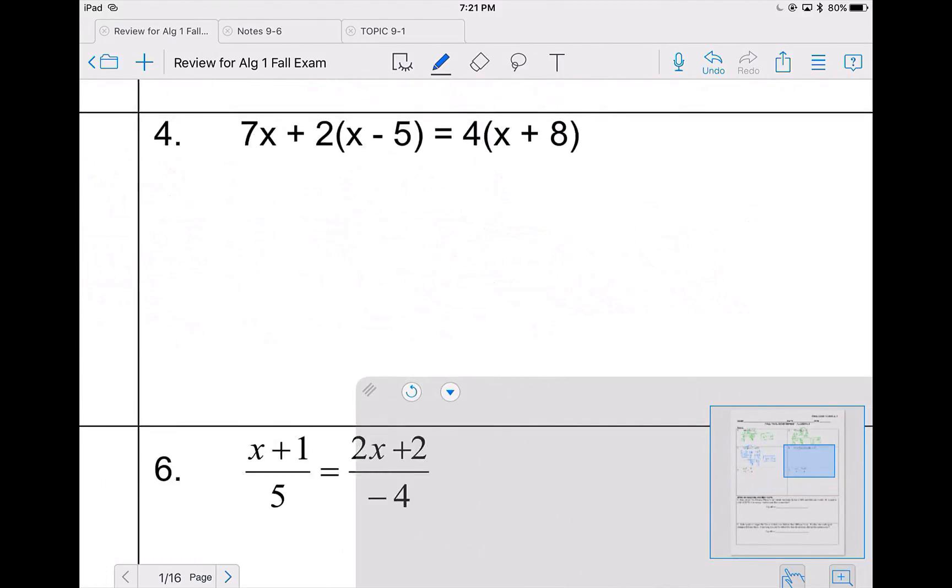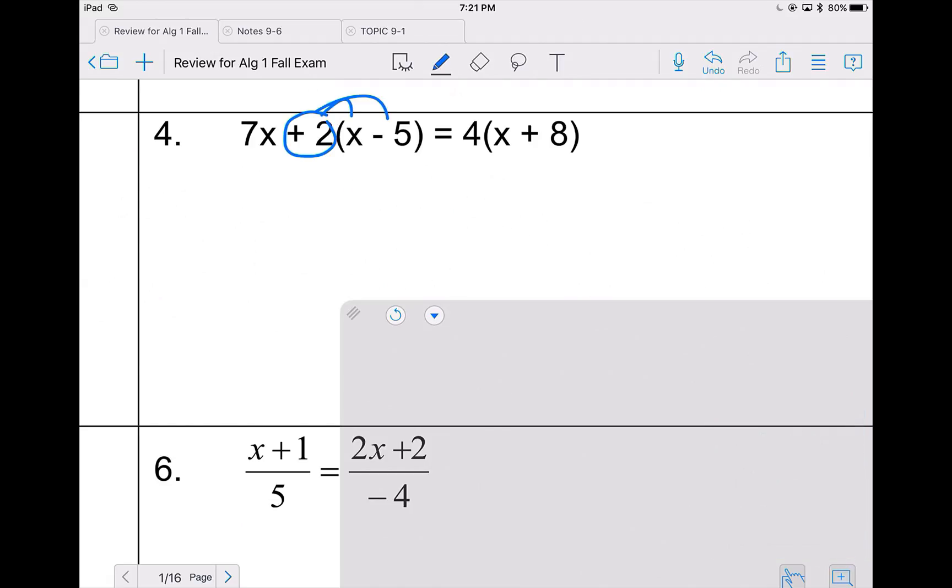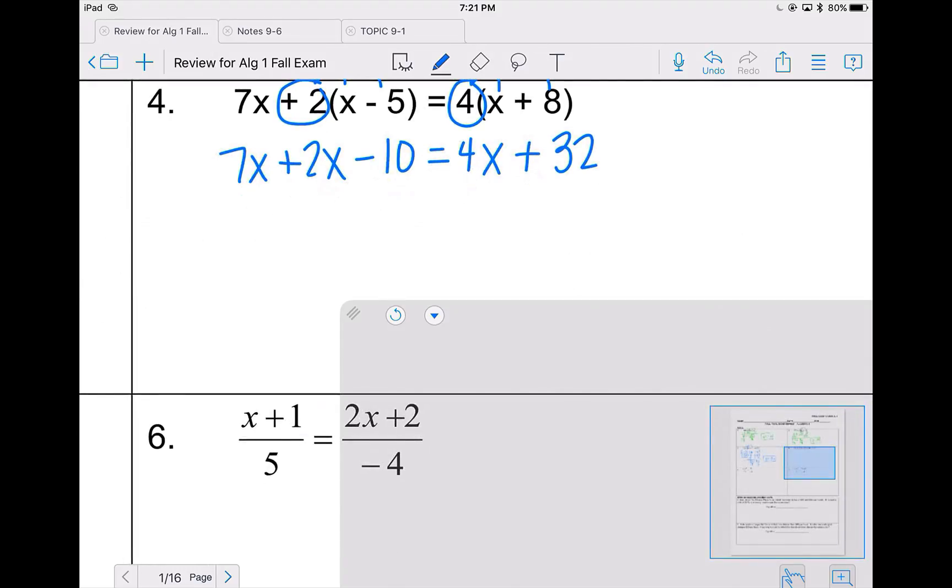For problem 4, I have two distributions that I need to take care of here. Notice that the 7x does not change. 2 times x is 2x. 2 times negative 5 is negative 10. And then on the right side, 4 times x is 4x, 4 times 8 is 32. On the left side, I need to combine my like terms. 7x plus 2x is a total of 9x.